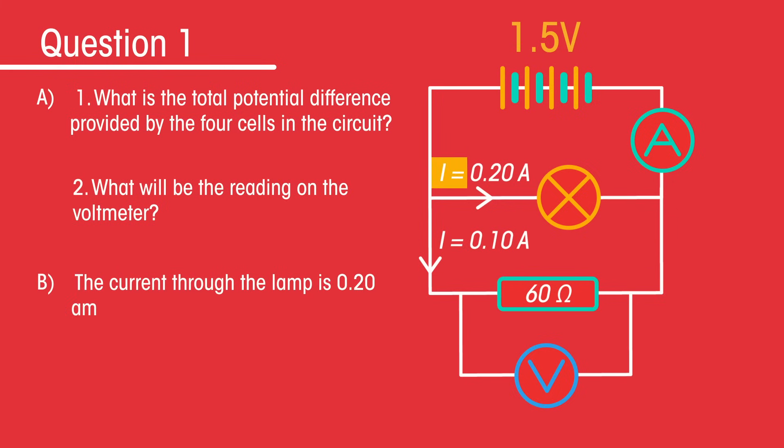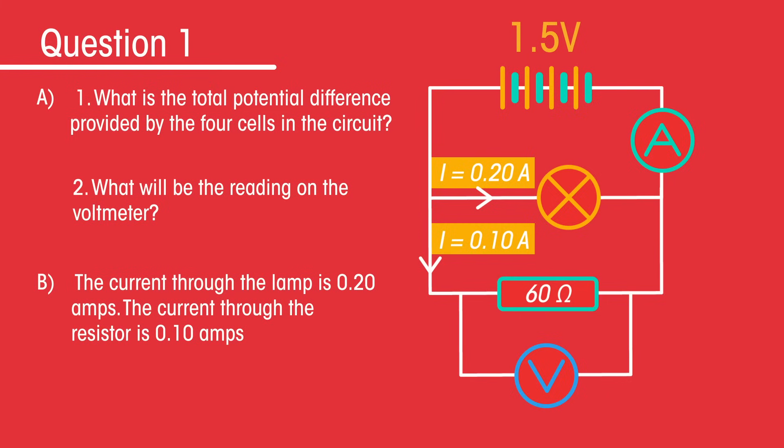The current through the lamp is 0.20 amps. The current through the resistor is 0.10 amps. What is the reading on the ammeter? Pause the video while you work out the answers.